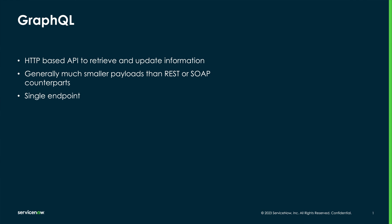The main components of the ServiceNow GraphQL API are the schema, the resolvers, and resolver mappings. We'll go into more detail on each of these in the upcoming videos.